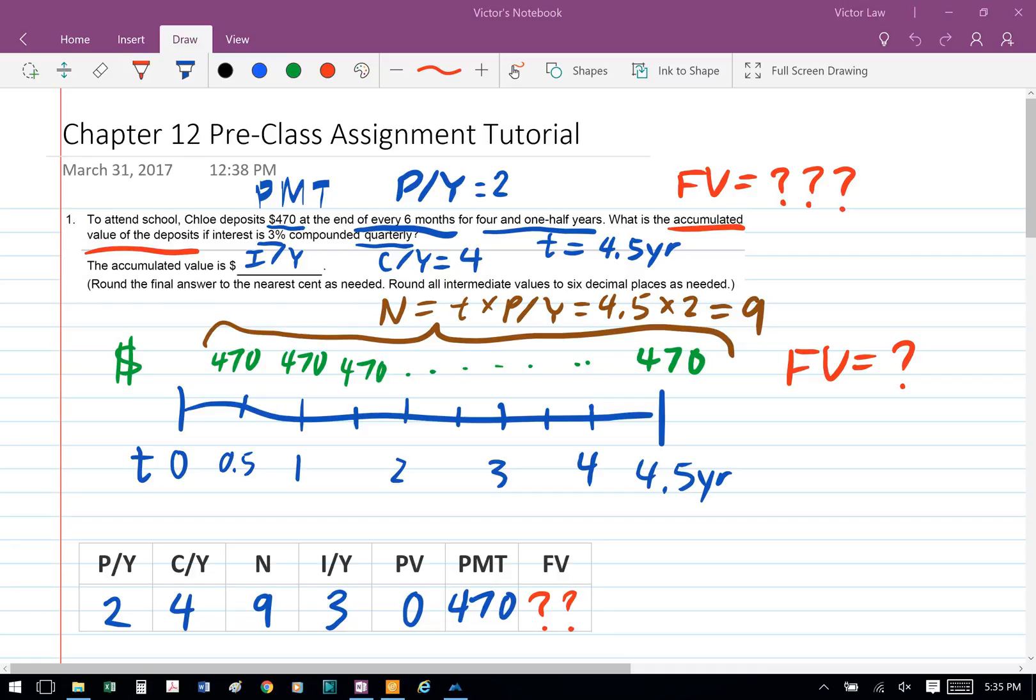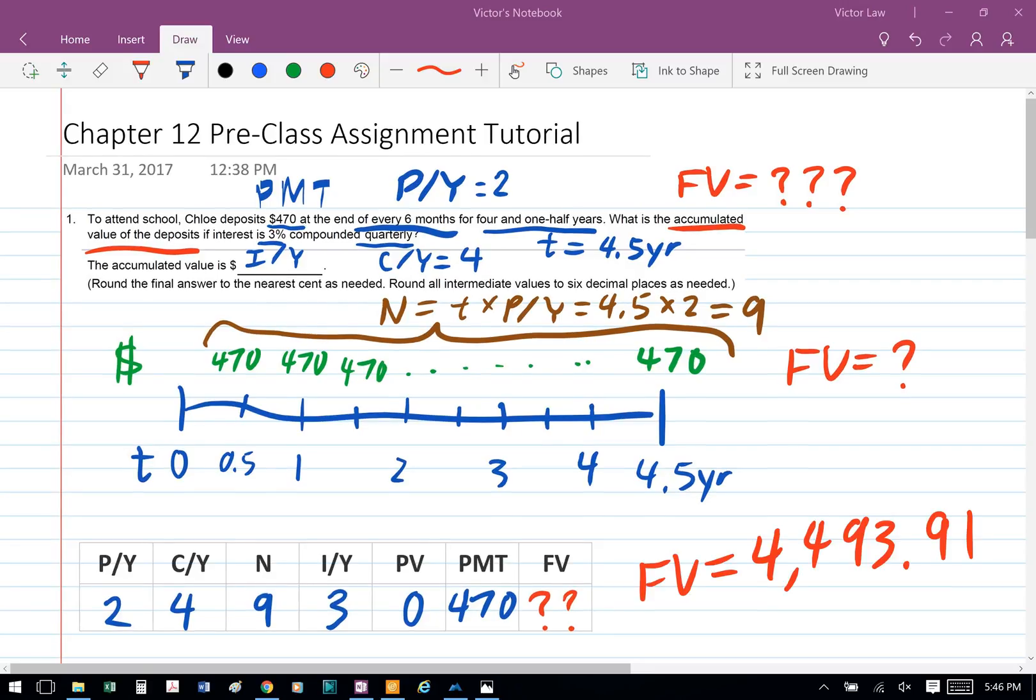Next step is we plug in the numbers: P/Y equals 2, C/Y equals 4, N equals 9, I/Y equals 3, present value is 0, payment is 470, and we're computing for future value. When we plug this into the financial calculator, we get future value of $4,493.91.